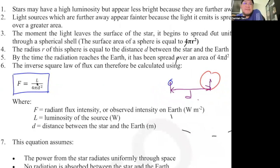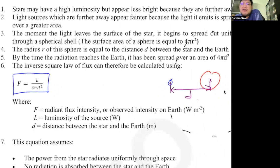That's the formula — easy! Radiant flux intensity is just like a lamp producing light: power over the area, surface area of the sphere where the Earth is. This formula is very important. Memorize it.